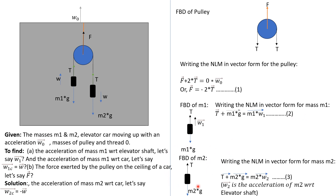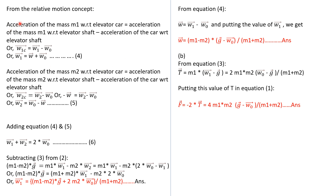Similarly, we write the equation for mass M2 and get equation 3. From the relative motion concept, the acceleration of mass M1 with respect to the elevator car equals the acceleration of M1 with respect to the elevator shaft minus the acceleration of the car with respect to the elevator shaft. From this we get equation 4: W1 equals W plus W0.